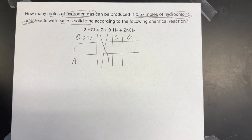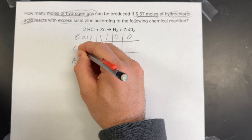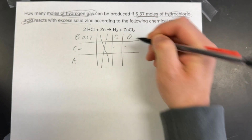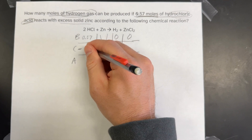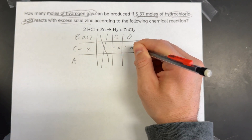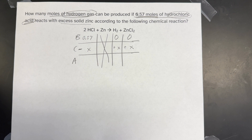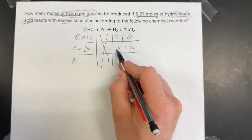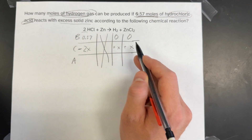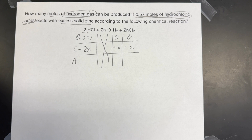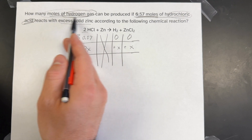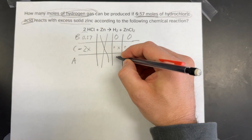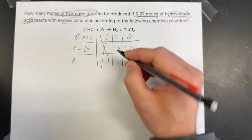It says I have excess zinc, so I can ignore the zinc column for this problem. Next, I'll fill in the change row. You're going to lose your reactant and gain your product. We always lose X and gain X, and it's important to put the balanced coefficient from the chemical reaction. Here I have a 2, so this is minus 2X. For H2 the coefficient is 1, so it's plus X. Let's pause and remember we're asked to find moles of hydrogen gas — that's the number we're looking for.